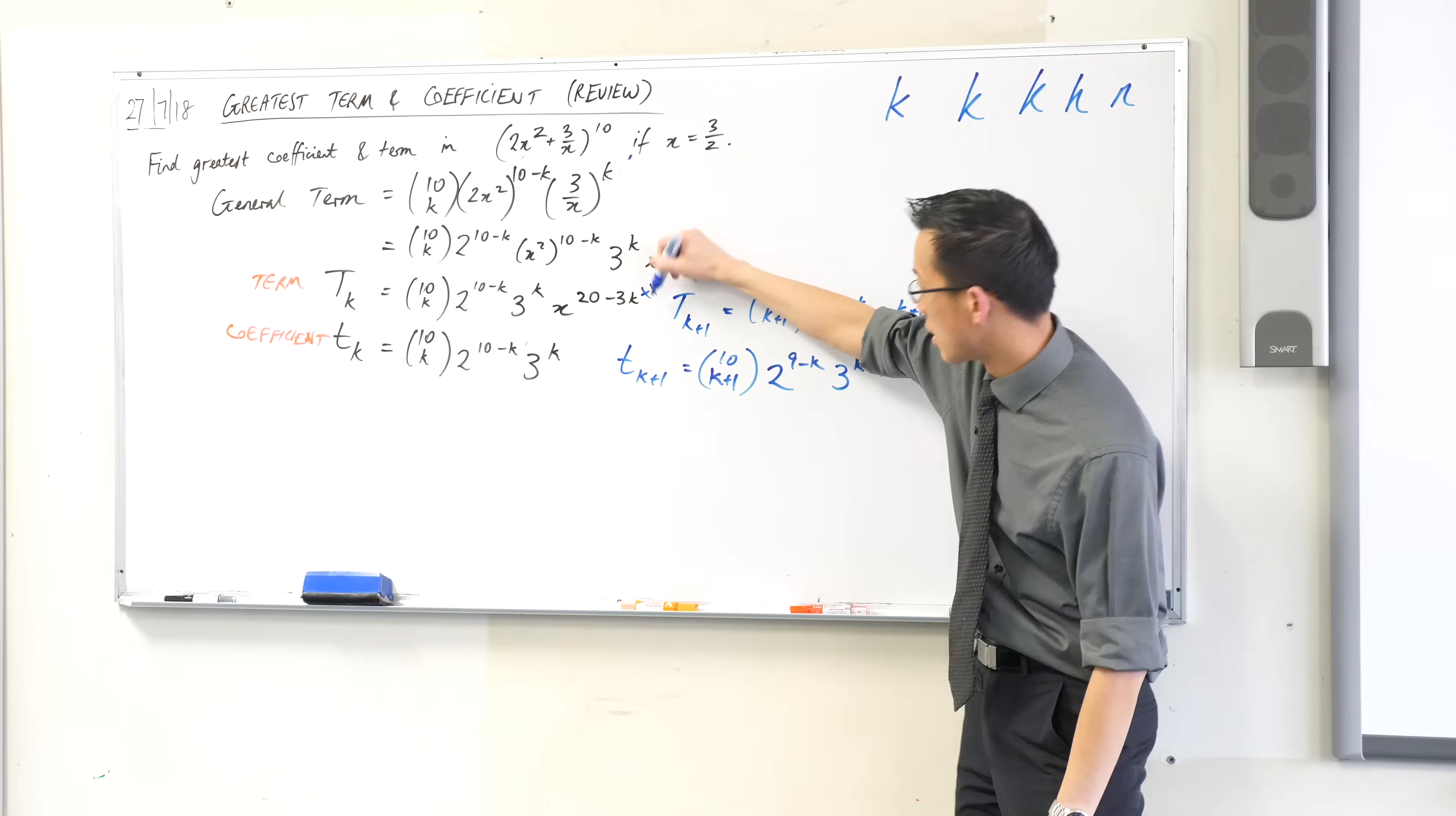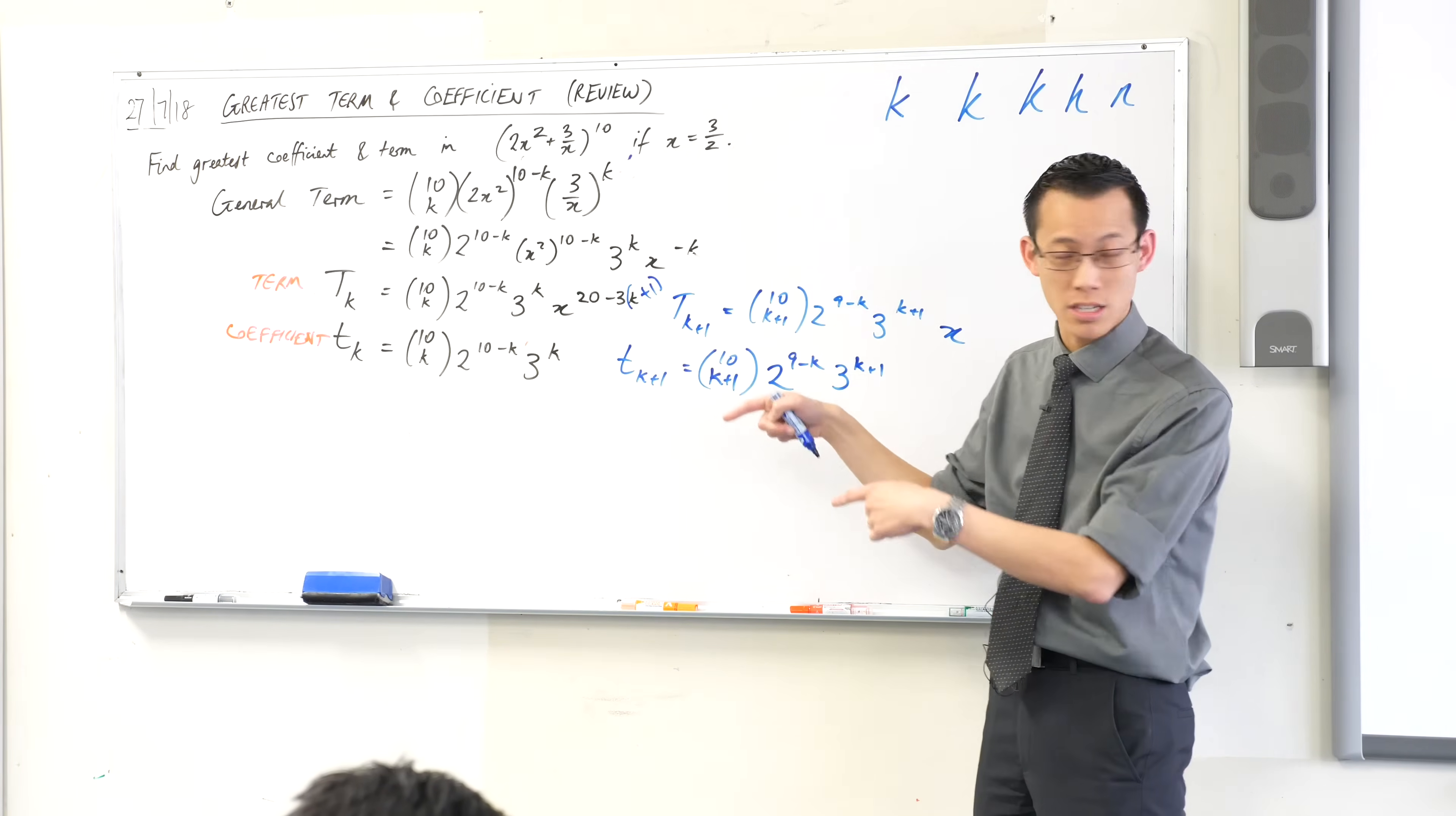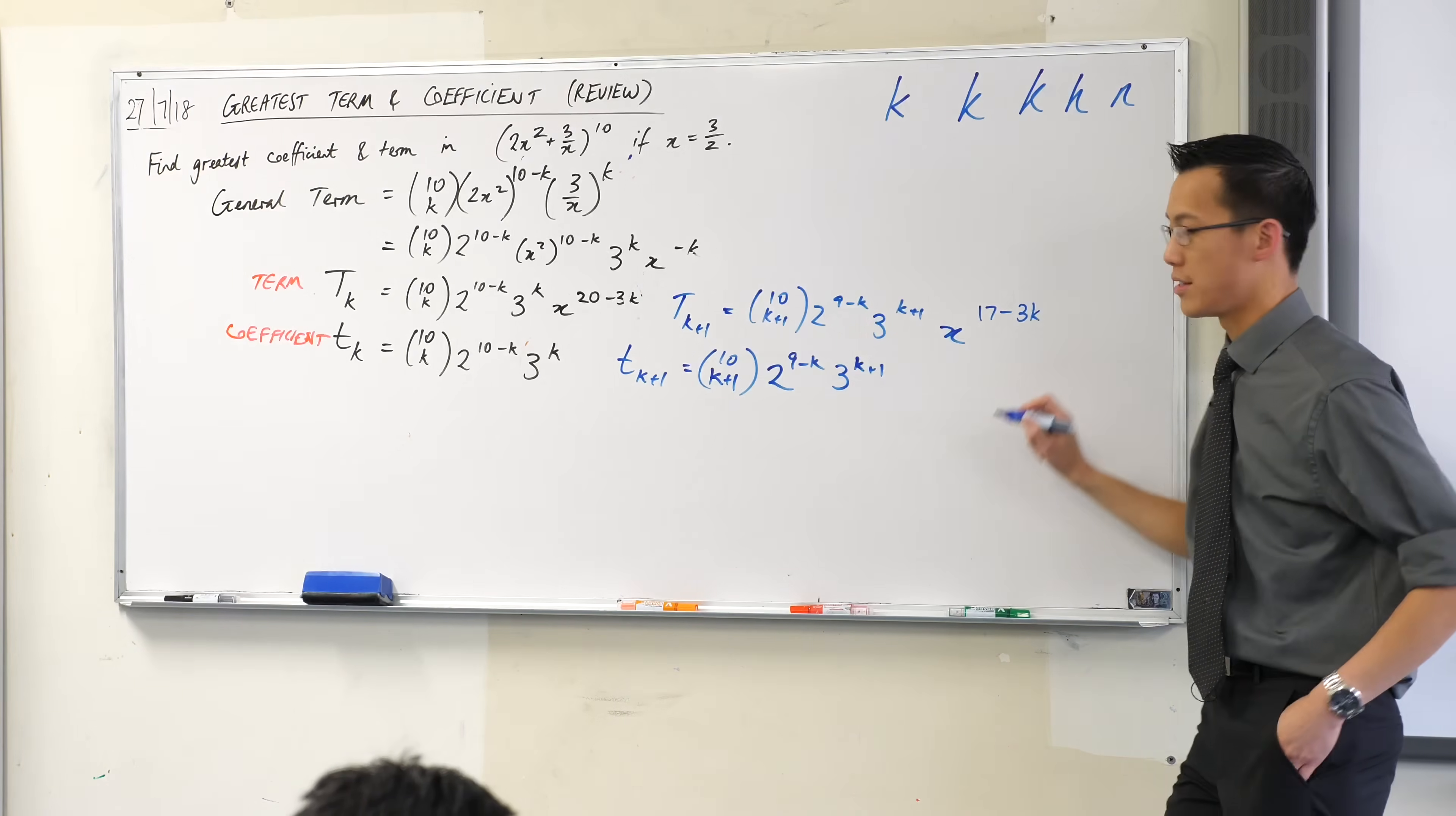So you're not just saying plus 1, you're actually saying plus 1 like so. So therefore there's going to be 20 minus 3k minus 3. You see how those are interacting? So in fact, this will not be 20 minus 3k anymore, it'll be 17 minus 3k.